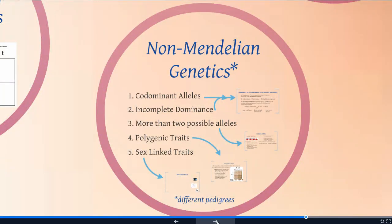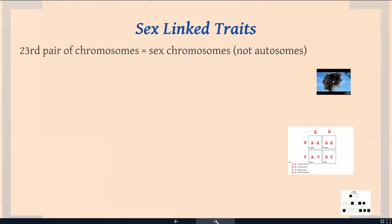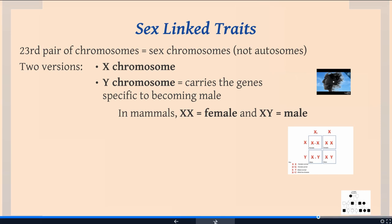The last piece of non-Mendelian genetics I want to talk about are sex-linked traits. Remember that we have 23 pairs of chromosomes. The first 22 are what we call autosomes — they are the same in men and women. The 23rd pair are the sex chromosomes, and there are two versions: an X chromosome and a Y chromosome. The Y chromosome carries the gene specific to becoming male, the SRY gene. In mammals, if you have two X chromosomes you are female, and if you have an X and a Y, you are male.